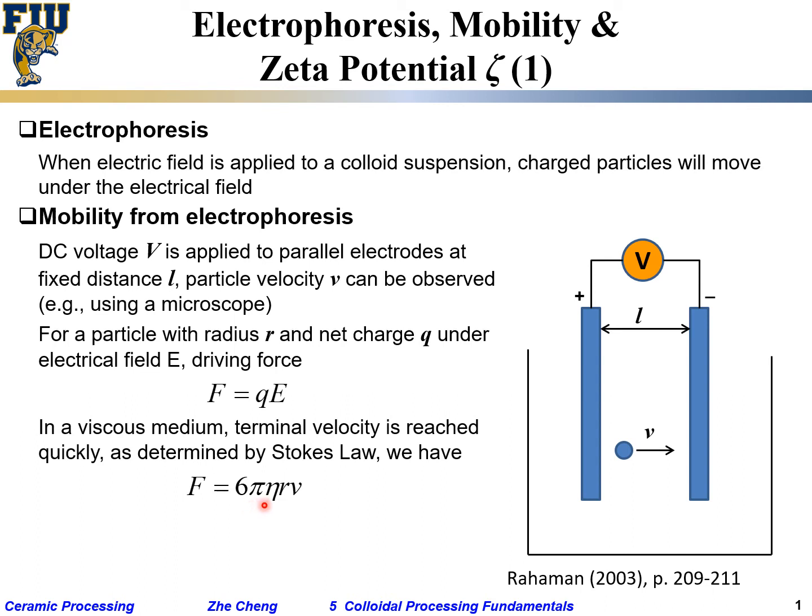A particle moving in solution experiences friction or resistance. This resistance force is given by 6π eta r v, where r is radius, eta is viscosity of the liquid, and v is terminal velocity. The higher the viscosity, the higher the drag force. The faster you go, the more drag. The larger your particle radius, the more drag.